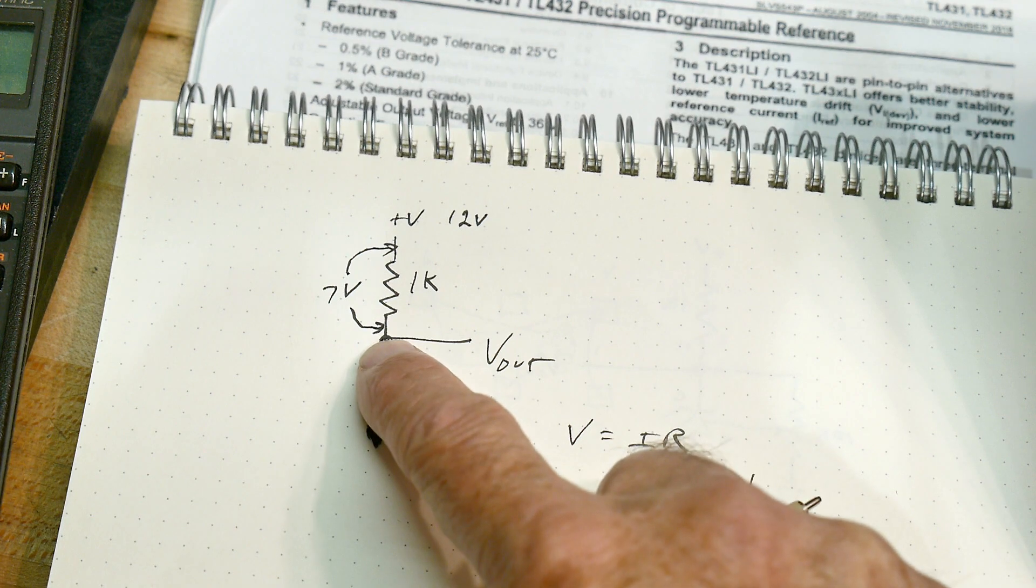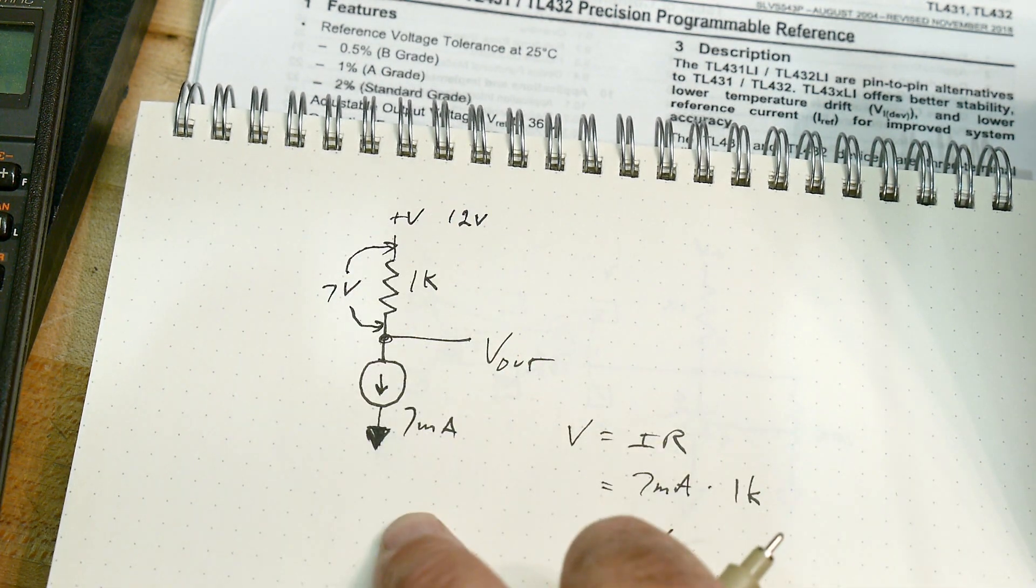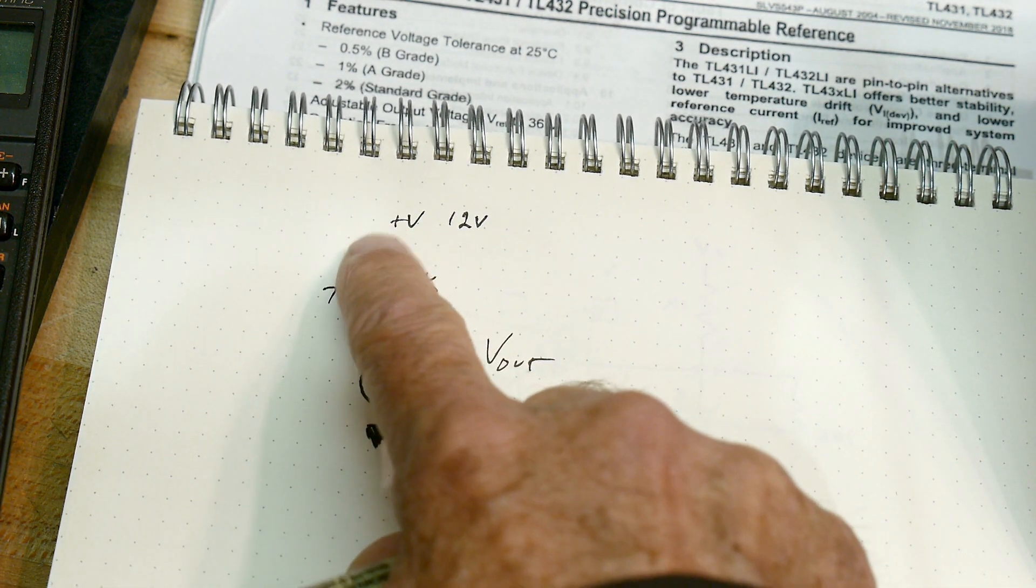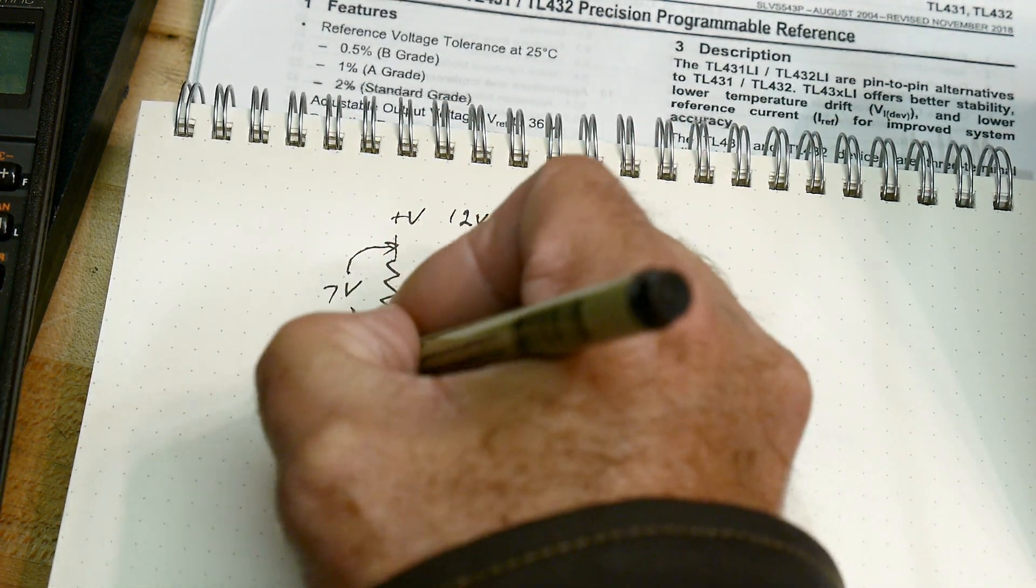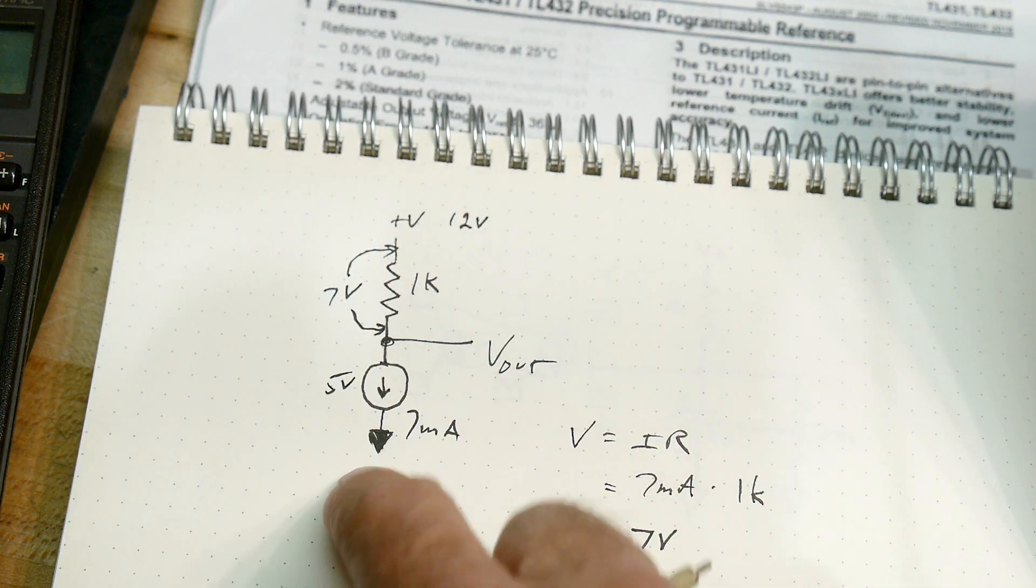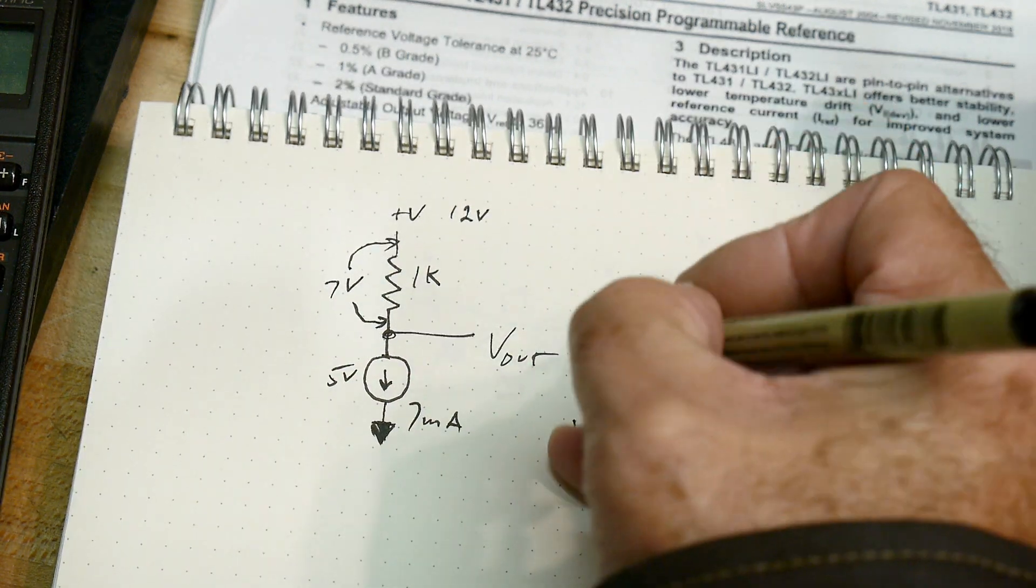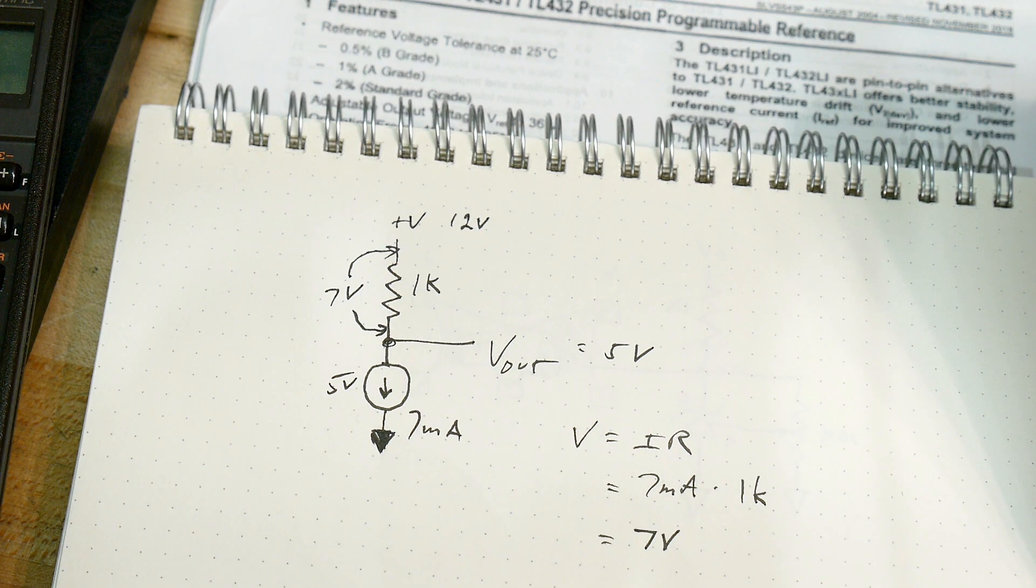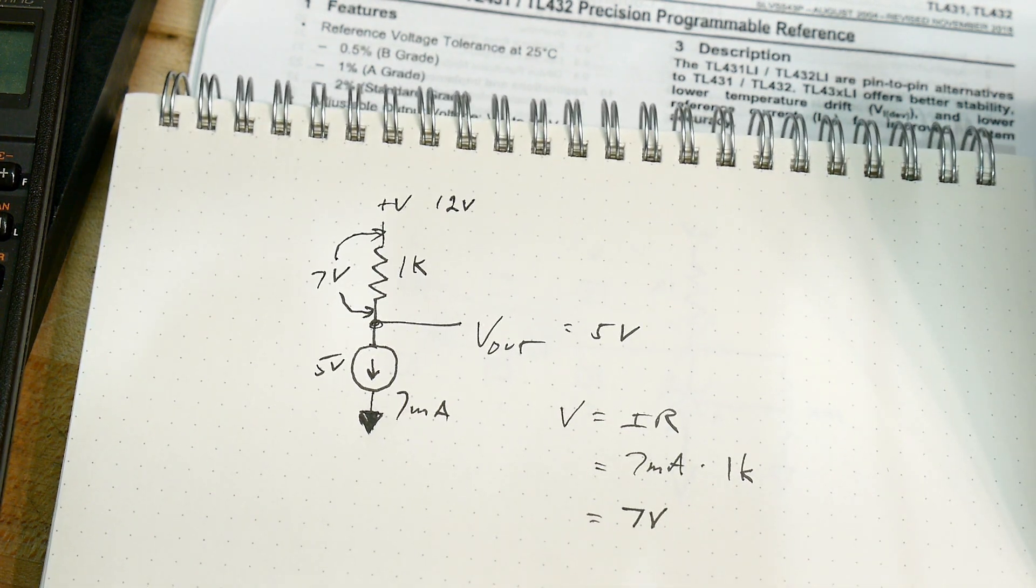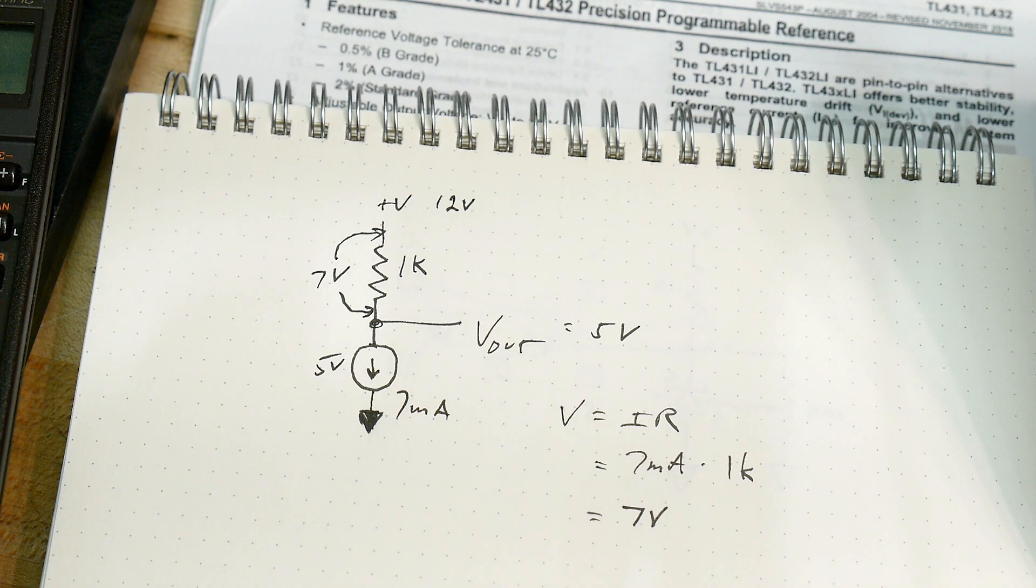But it's 7 volts here, but it's 12 volts total. So if this is 7 and it has to add up to 12, then this must be at 5 volts. We have to have it add up to 12. So the V output will equal 5 volts.